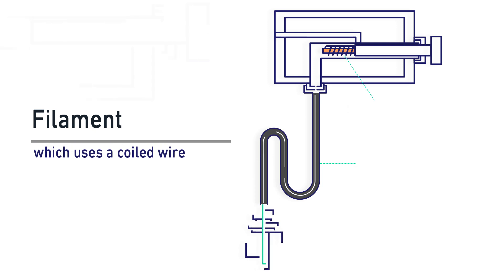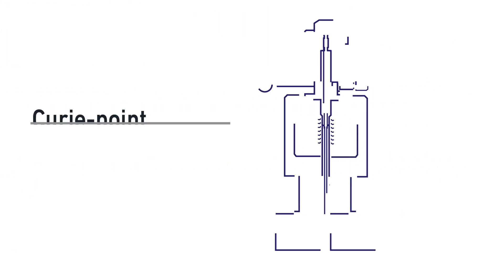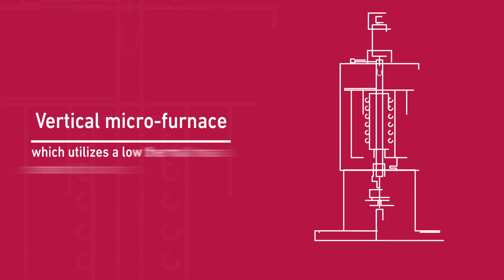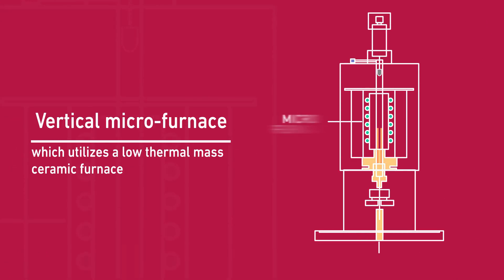Filament, which uses a coiled wire. Curie Point, which employs a ferromagnetic foil. And Vertical Micro Furnace, which utilizes a low thermal mass ceramic furnace.